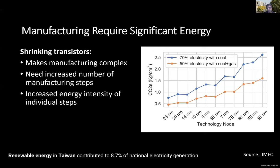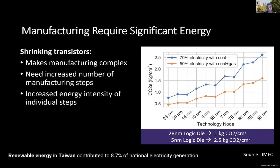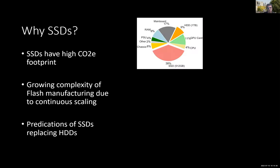This data collected by IMEC — a fab in Europe — shows that as we shrink transistors on a logic die (CPU-type manufacturing), carbon emissions are increasing. The data is shown for two types of grids: one where 70% of electricity comes from coal, and one with some availability of renewable energy. The bottom line is that with growing manufacturing complexity, carbon emission cost is also increasing.